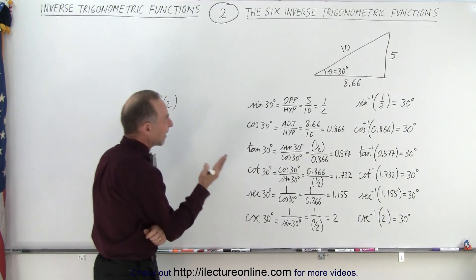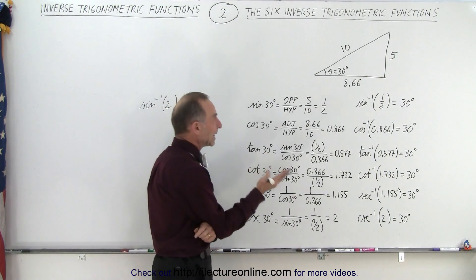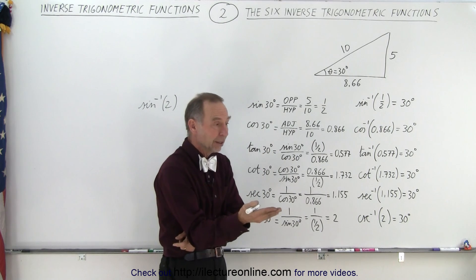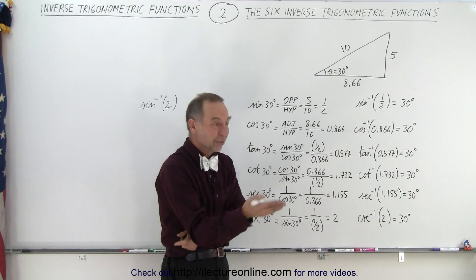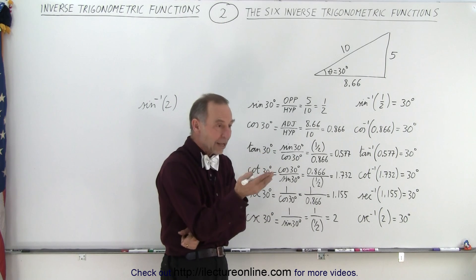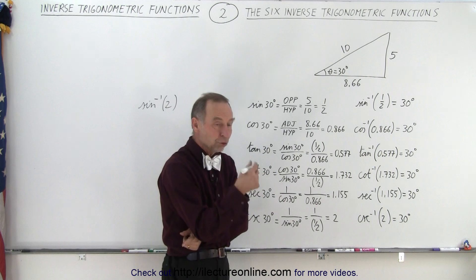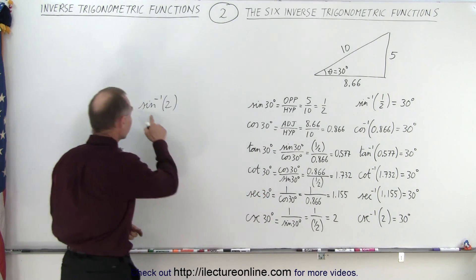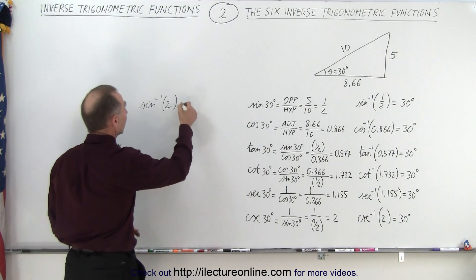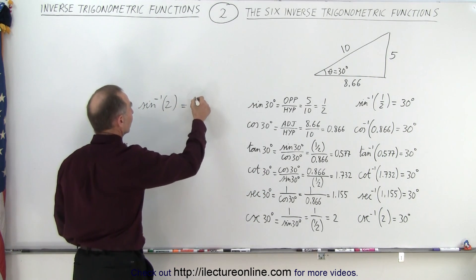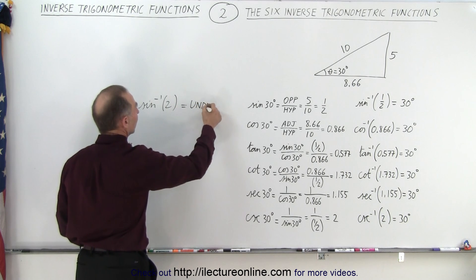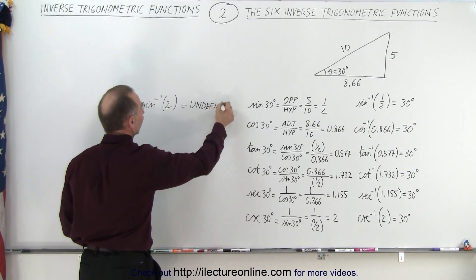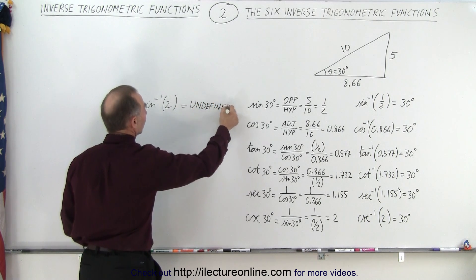Well, since the sine cannot be any bigger than 1 or any smaller than negative 1, there is no such angle that will give you 2 when you take the sine of it. So when you plug that into the inverse function, it is of course undefined — there is no such thing as the inverse sine of the number 2.